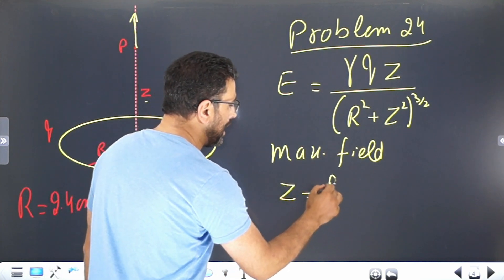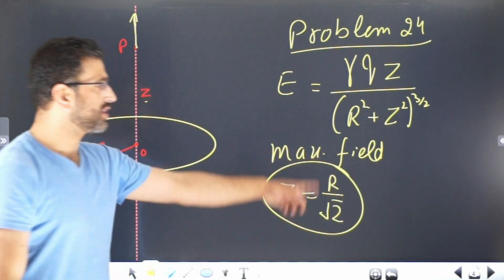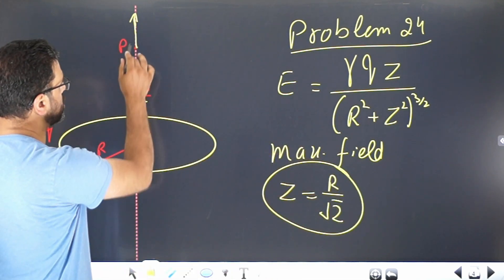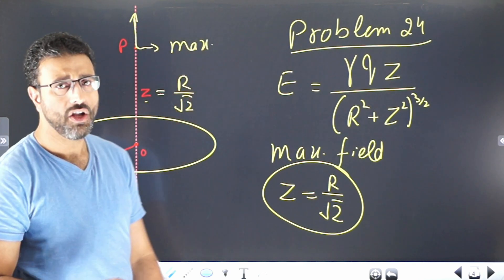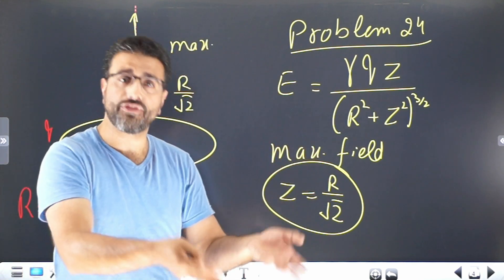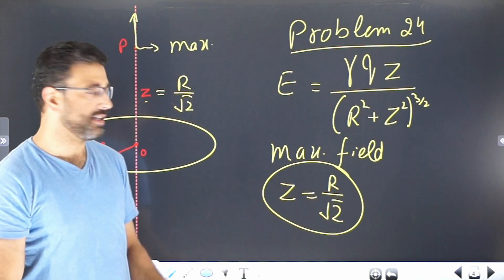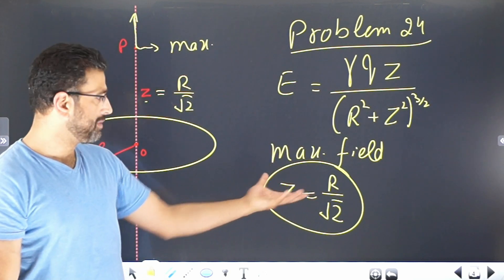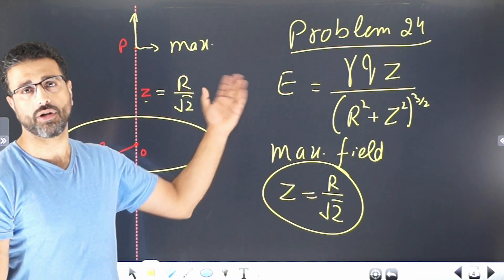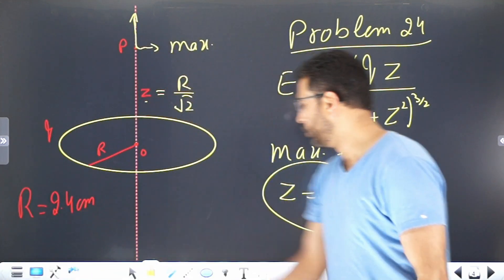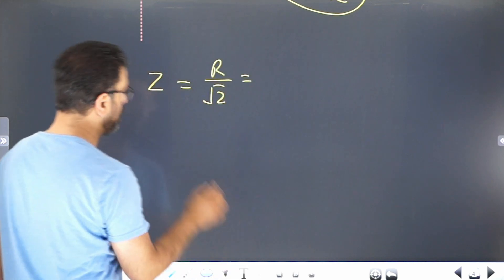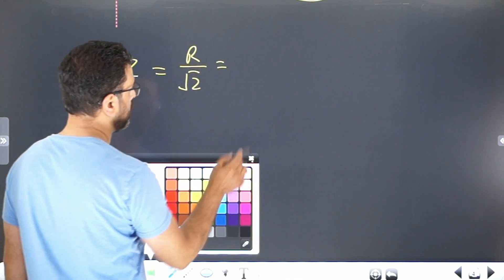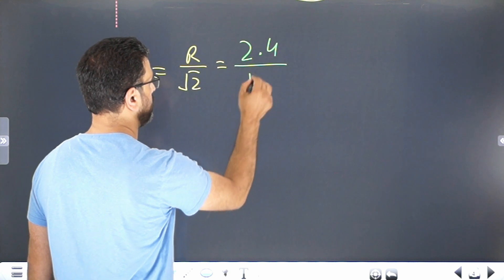Maximum field occurs at z equal to r divided by root 2. So for this distance, 2.4 cm divided by root 2. Field is maximum at z equal to r divided by root 2, which is 2.4 cm divided by root 2.